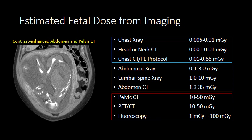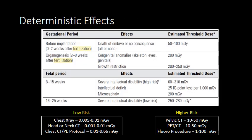When you get into pelvic CT, PET-CT, or fluoroscopy, you're getting into that range where deterministic effects can occur, and so these are the types of imaging we would prefer to avoid during fetal development. Imaging in the blue box — chest x-rays, head and neck CTs, or PE protocols — is well below the threshold dose required for any deterministic effects. Direct imaging of the pelvis, particularly with CT or fluoroscopy, approaches the threshold dose, and if you get repeated studies in a short period of time, you may reach a threshold for a deterministic effect. We want to be very careful using any of these modalities in a pregnant woman.